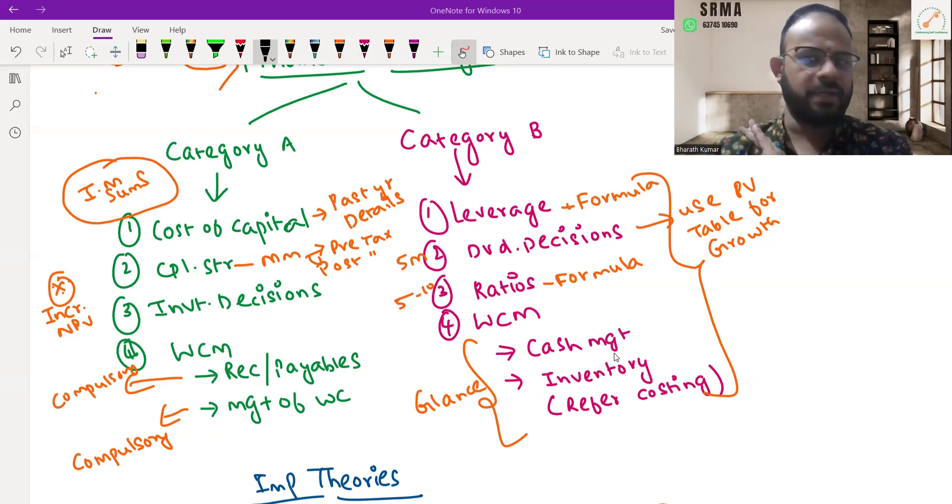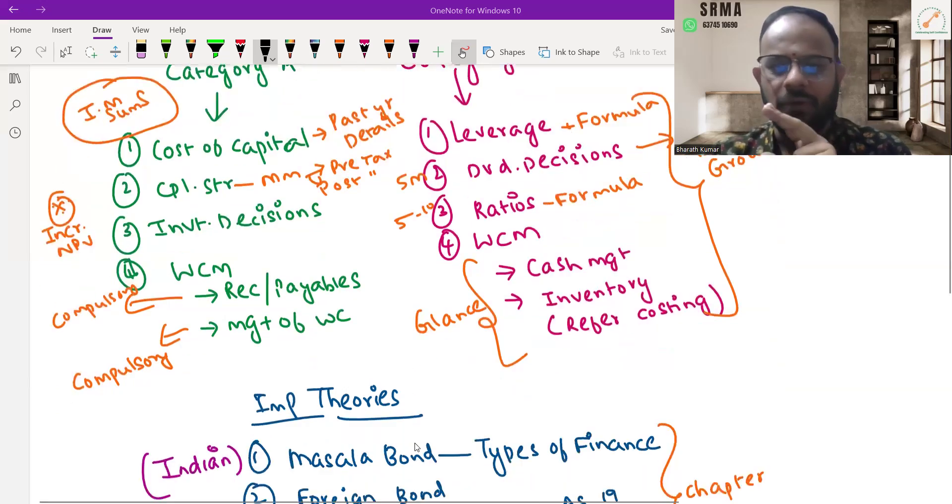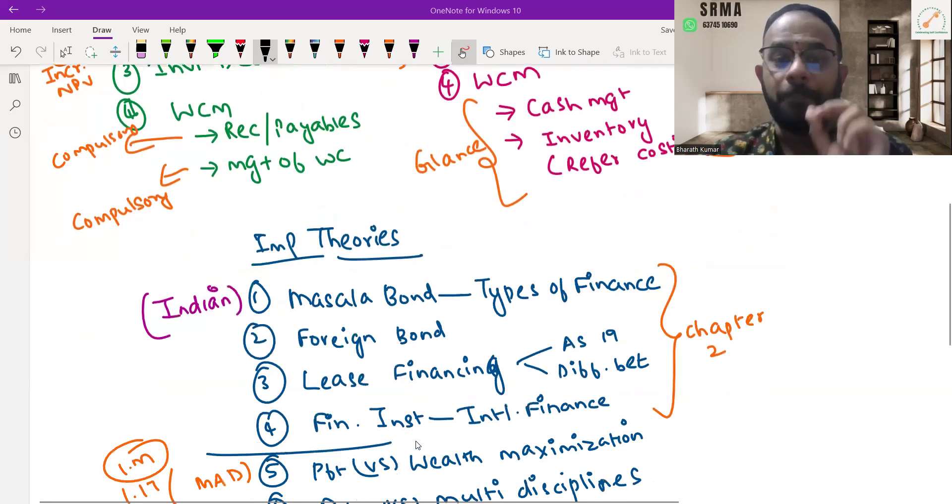Cover cash management and inventory accordingly. I've already mentioned the costing material coverage here. Private company and public company topics should be carefully reviewed.